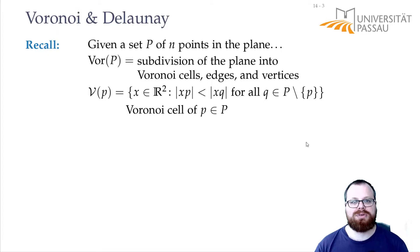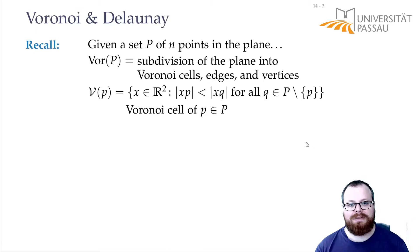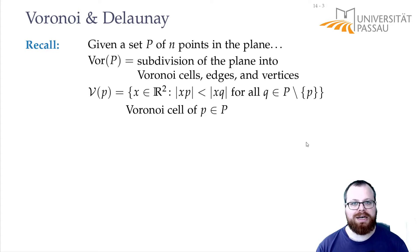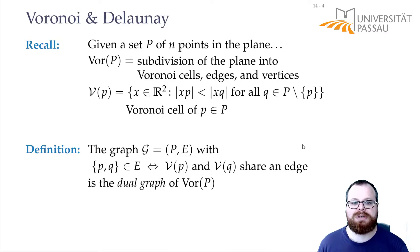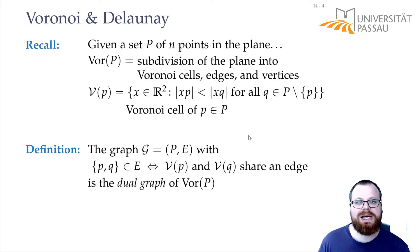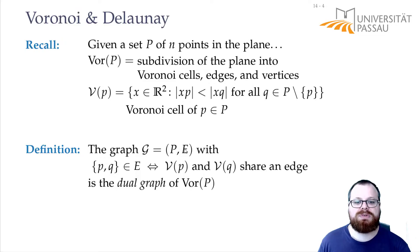What we want to do is compute this Voronoi diagram and then take its dual graph. A dual graph is obtained by placing a vertex in every face and then connecting them if they share an edge. Formally, for our Voronoi diagram, the dual graph is defined as follows: the vertex set is the point set P. In the Voronoi diagram we have one cell or one face for every point, and these points are our vertices. We have an edge between two vertices if the corresponding Voronoi cells share an edge.